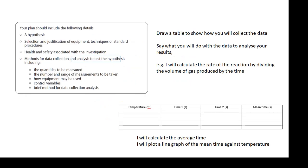Analysis. What are you going to do with your data? I suggest you draw a little table to show how you will collect the data. Temperature in degrees centigrade, time one in seconds, time two in seconds, and the mean time in seconds. I will calculate the rate of reaction by dividing the volume of gas produced by the time. Say what you're going to do with your data. How are you going to analyze your results? I will calculate the average time. I will plot a line graph of the mean time against temperature.